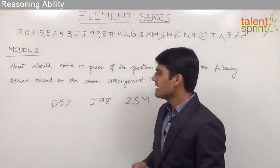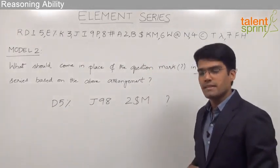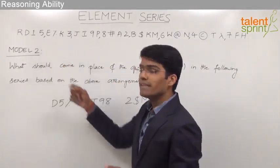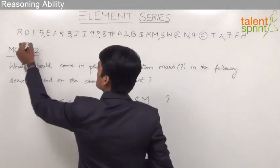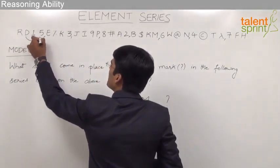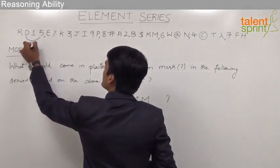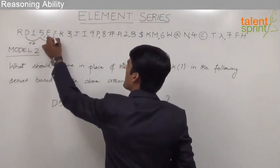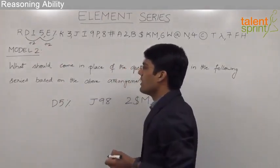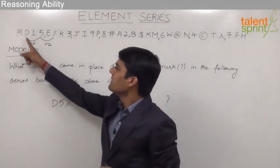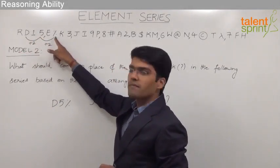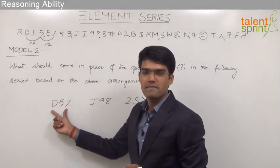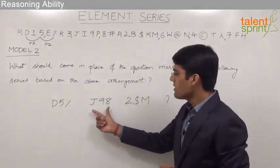Let us understand the positioning of these elements in the given element series. Looking at the first set, D5%, D is in its position, two positions away we have 5, and again two positions away from 5 we have percentage. So D, then +2 positions gives 5, and +2 positions gives percentage — that is the positioning of the first triplet D5%.